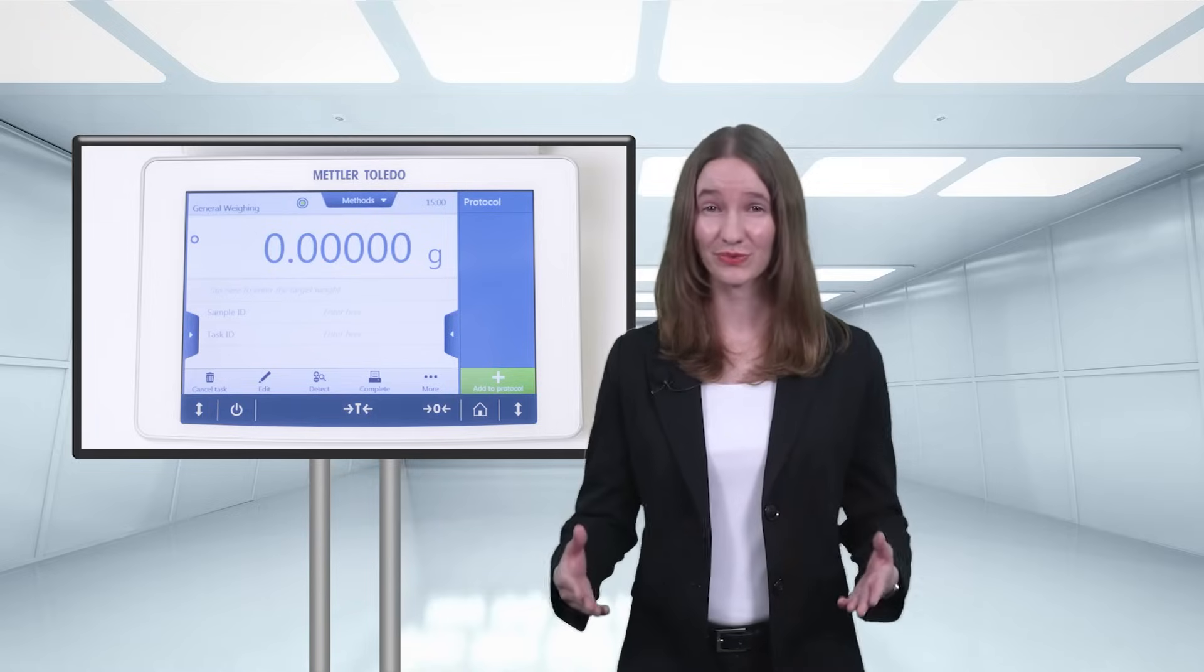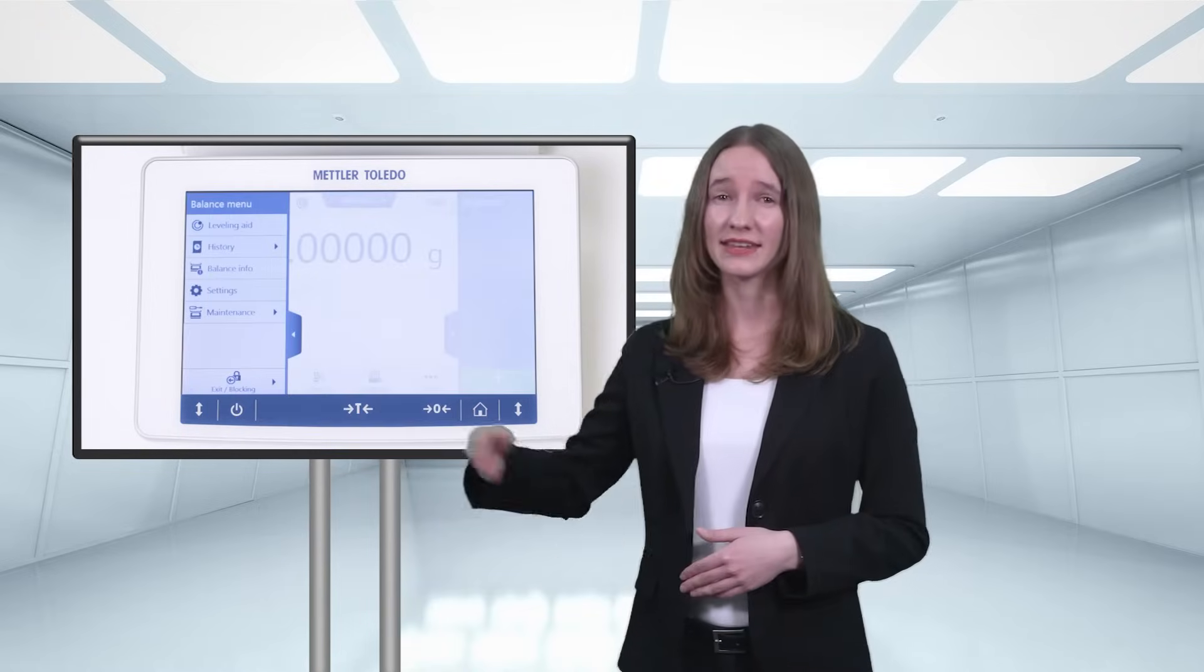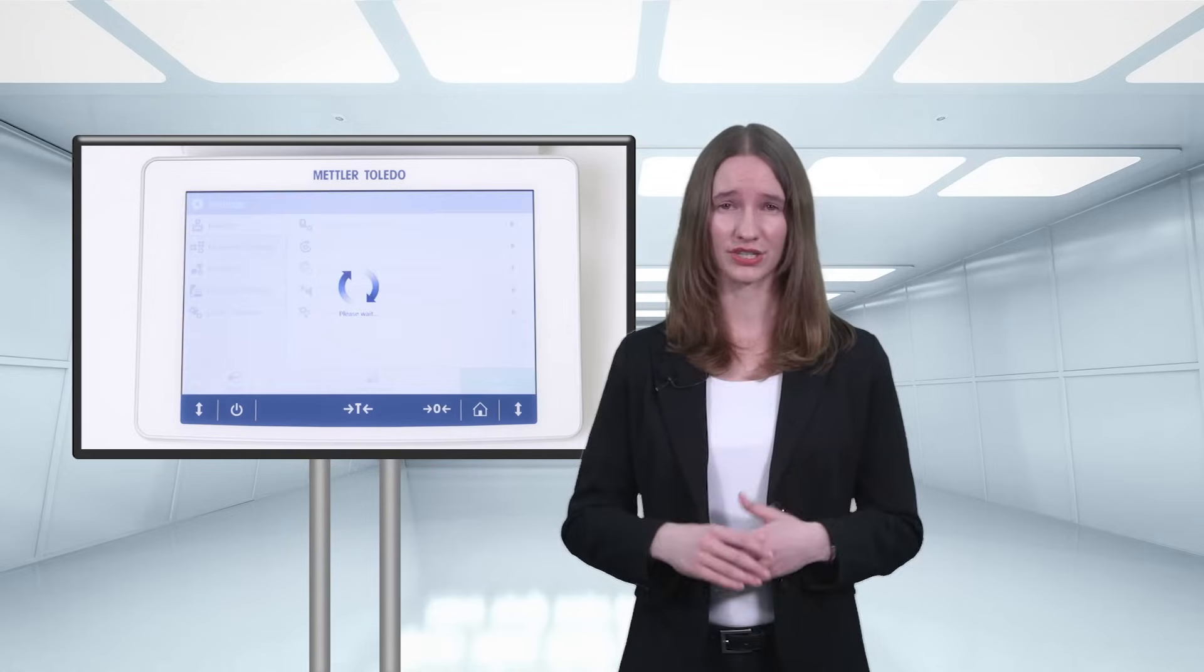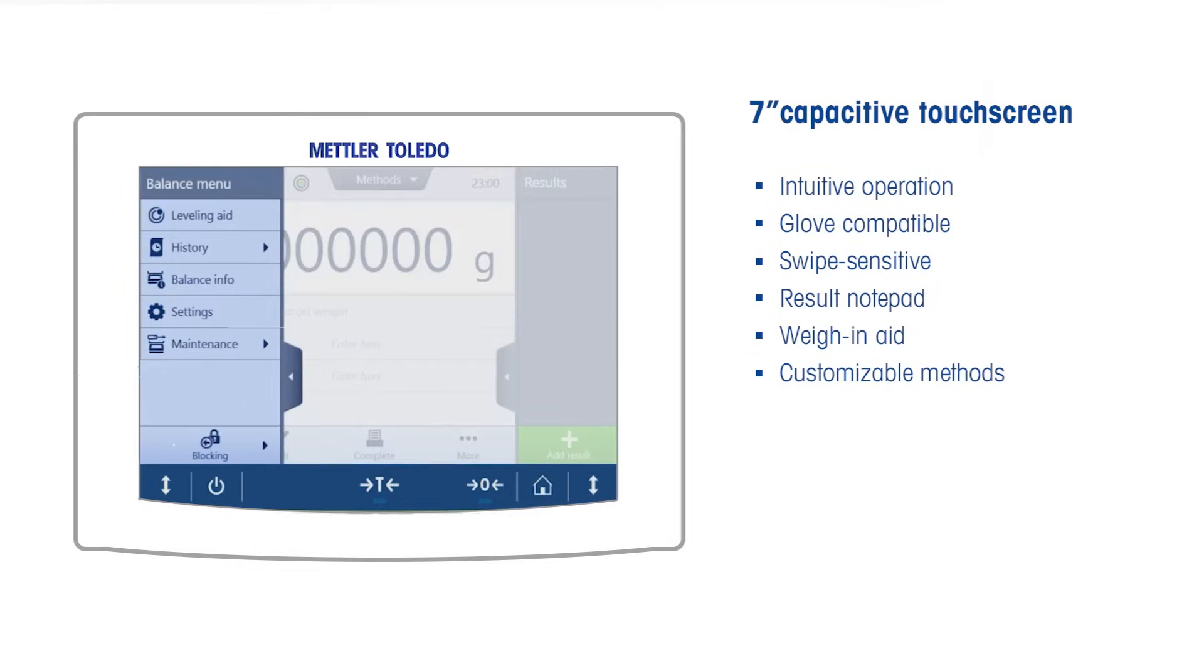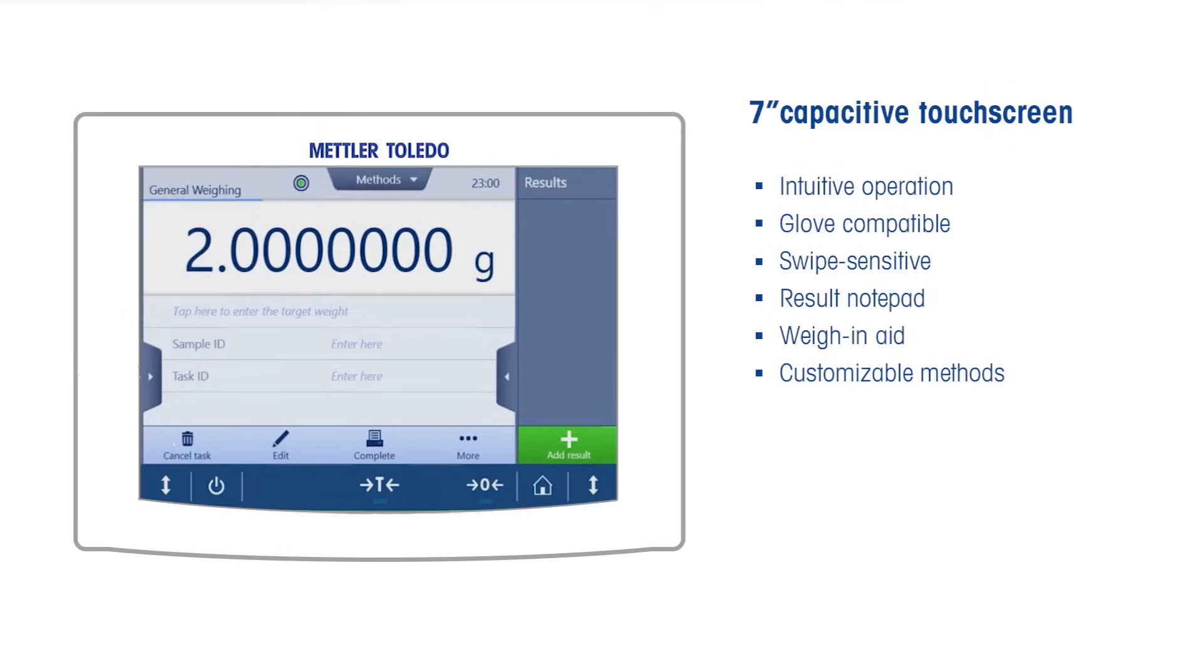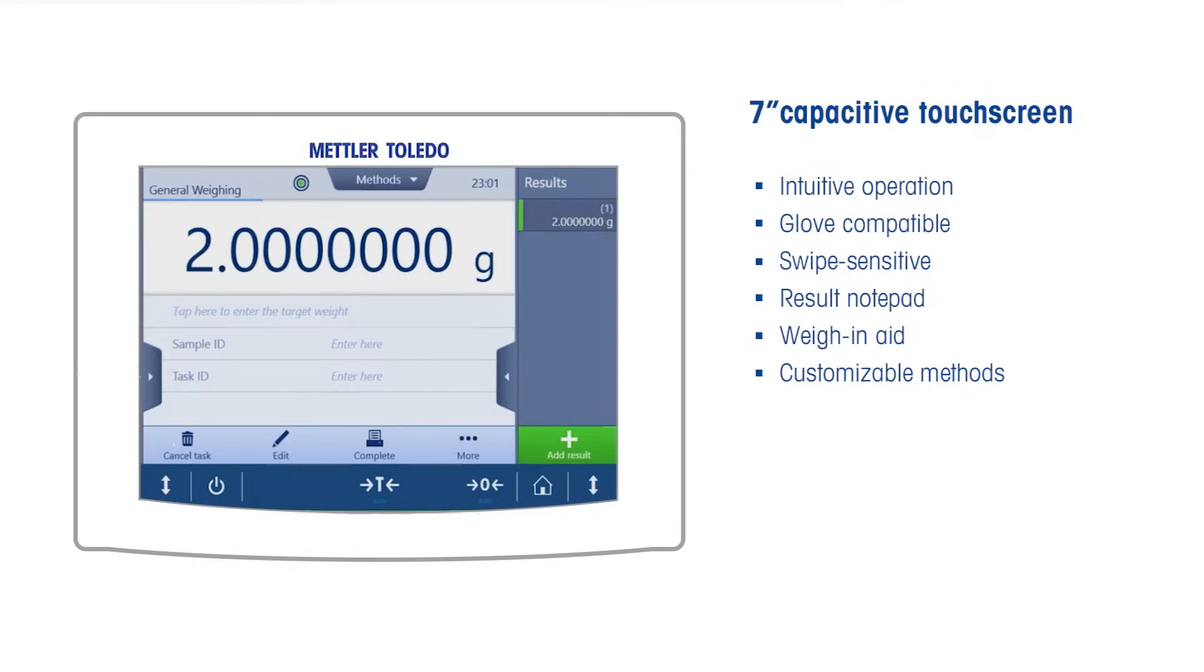Of course, we did not stop at improving the hardware, but continued with the user interface. The XPR's large colored touchscreen is as intuitive as your smartphone and works even when wearing thick gloves. With just one swipe, you can enter the menu, methods, and result notepad, where you see all your measurement details, giving you an overview over your completed tasks anytime.